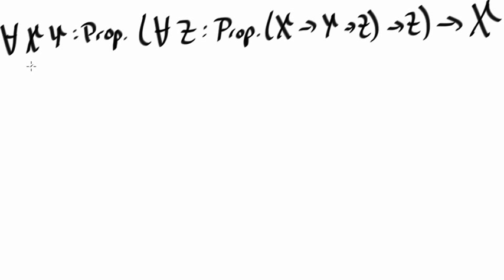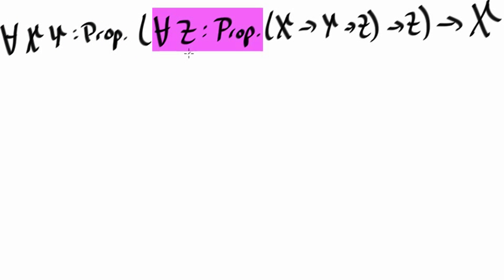In previous examples, universal quantifiers were only used as prefixes to introduce the variables used in the propositions. That's not true here. That's the way universal quantifiers are used for x and y, but not for z. This for-all z is used in a different way, and it will have certain effects when we start proving the theorem, as we'll see in a moment.